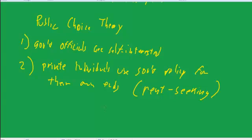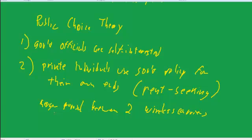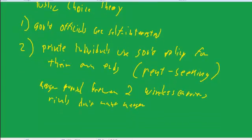So if there is a potential monopoly available, then private individuals will bid with the government to try to get control over it. For example, there's a merger proposal between two big wireless carriers, and the rivals don't want the merger, so they'll go to the government and say stop the merger. Now there may be some public benefit to stopping the merger, but it's primarily the rivals that are involved.